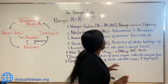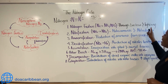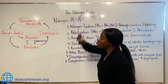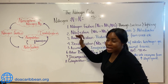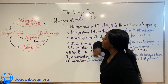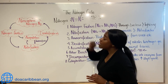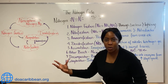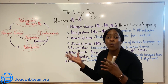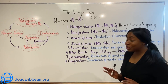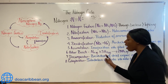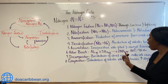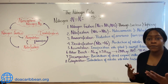Another way nitrogen can be fixed occurs during lightning. During lightning, the strong triple bond between the diatomic nitrogen is ruptured into individual nitrogen atoms. These atoms of nitrogen can combine with oxygen to form nitrates or other nitrogenous compounds, which can dissolve in rain and be washed into the soil. Industrially, nitrogen combines with hydrogen gas under high temperature and pressure to form ammonia, which can be used to make fertilizers.